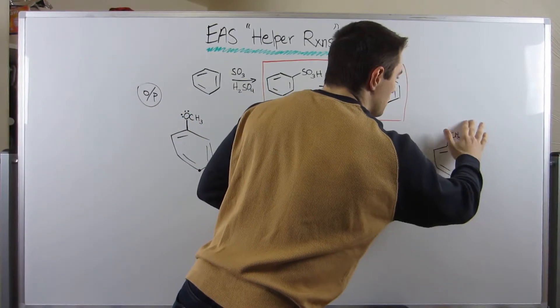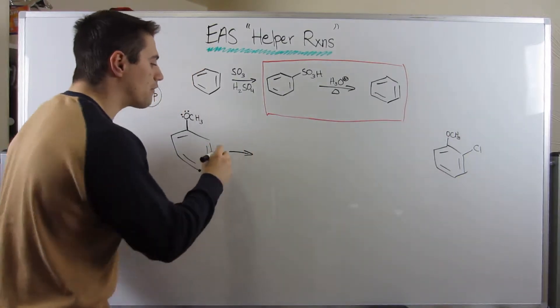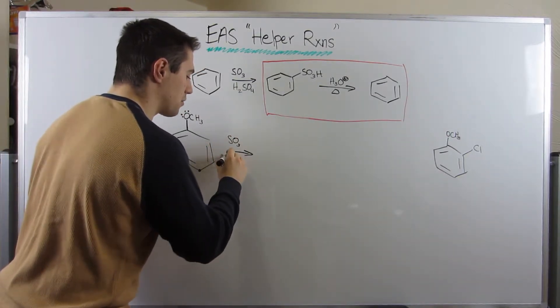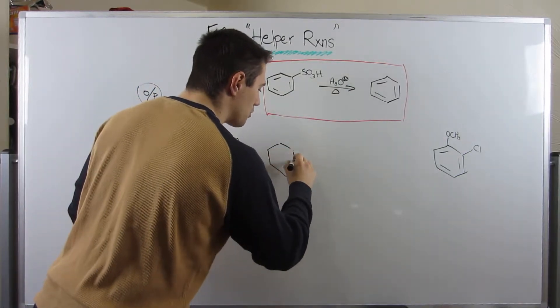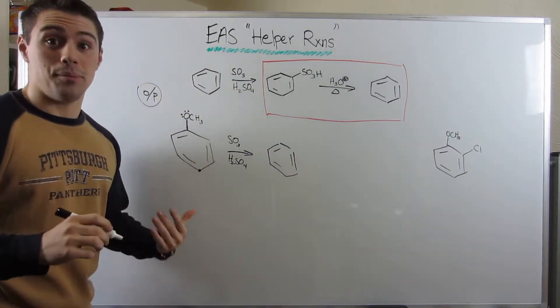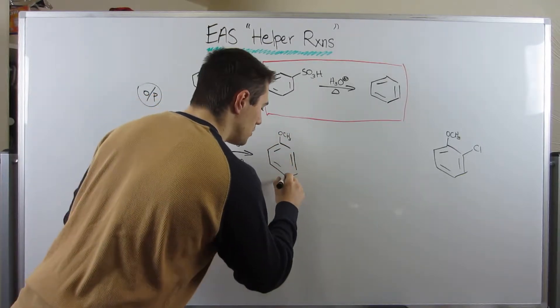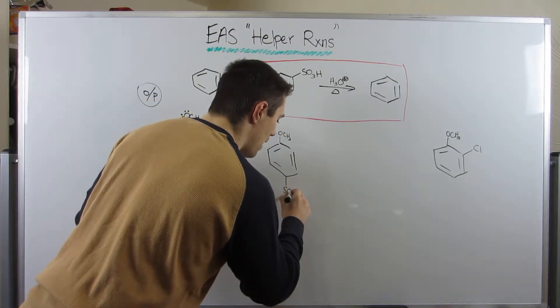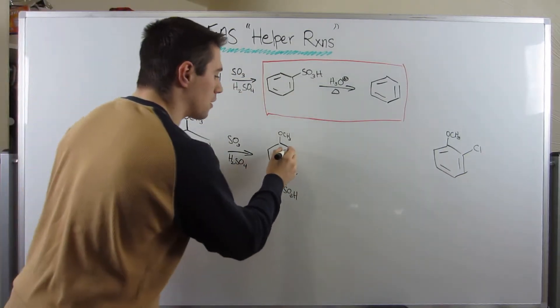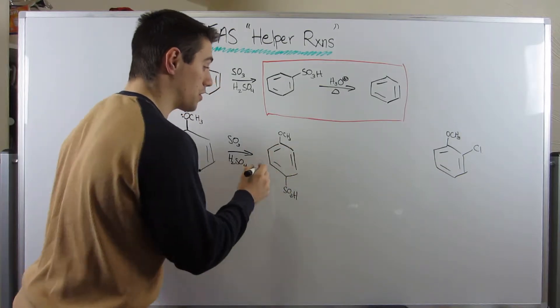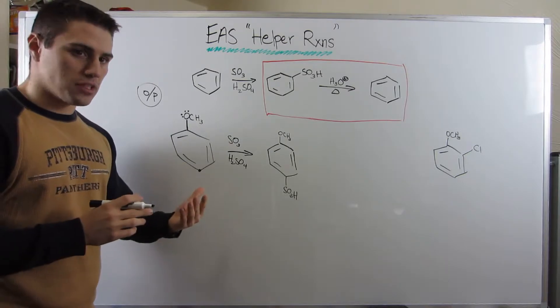Because chlorine isn't exactly the smallest atom, and these groups are probably going to collide if they're next door to each other in the ortho-positions. So here's where this reaction can come in very handily. So if I were to first throw in some SO3 and some H2SO4, here's what we can expect. The sulfonyl group is pretty big, so you can bet pretty surely that it is going to be directed into the para position from the methoxy group.